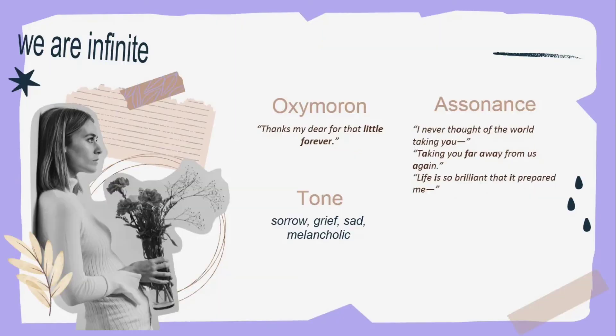Next, we have oxymoron, which is a combination of words with contrasting definitions. We have the line 'Thanks, my dear, for that little forever' — 'little forever' is contrasting: 'little' is synonymous with short, and 'forever' is synonymous with long. So these are contrasting ideas put together — that is oxymoron.